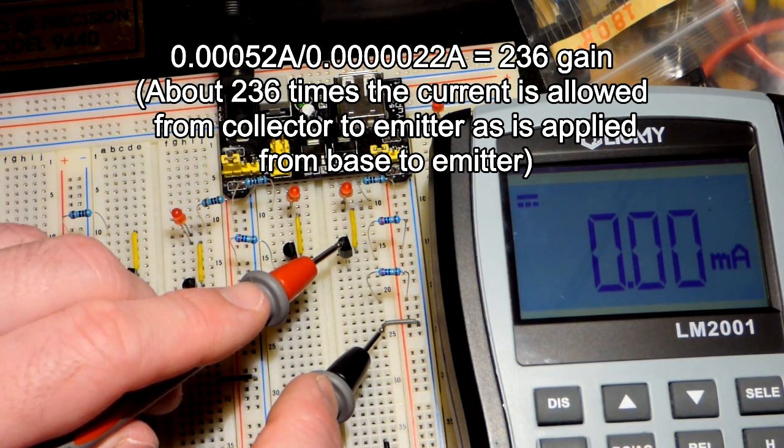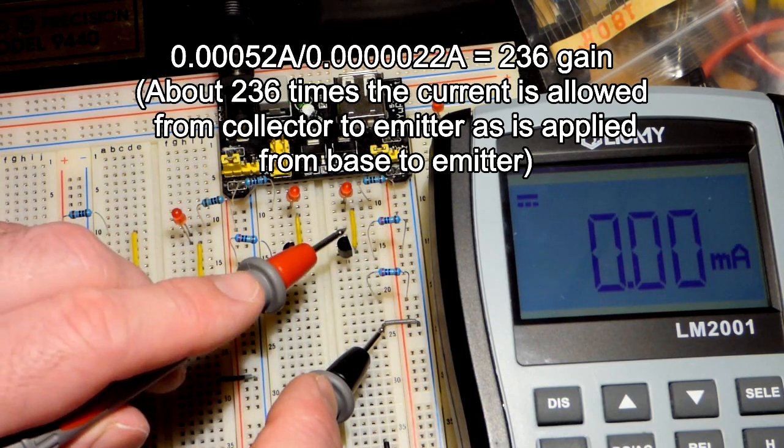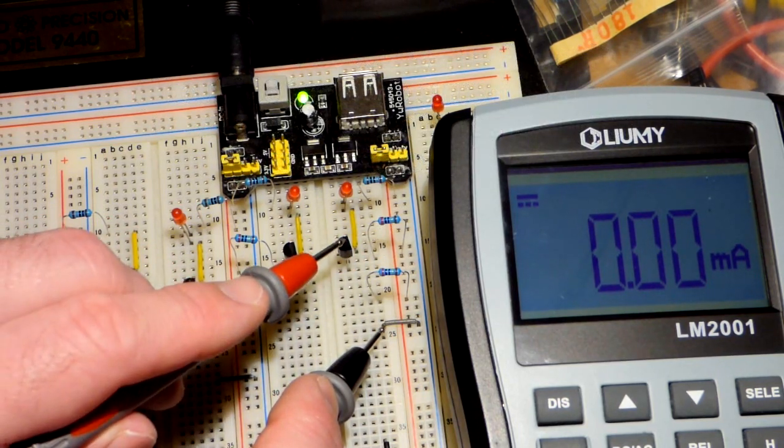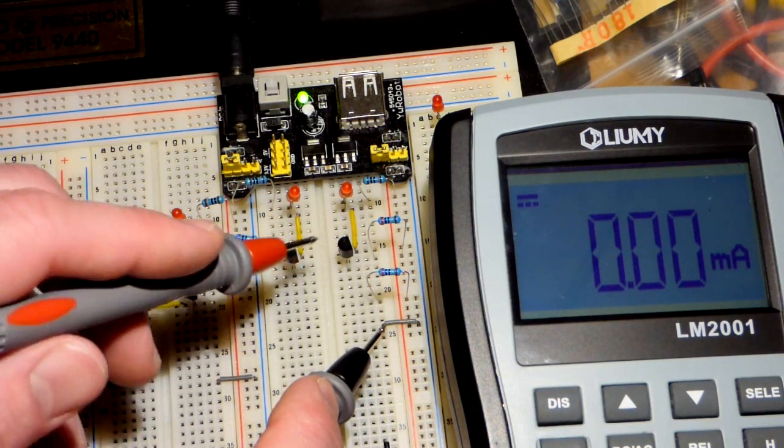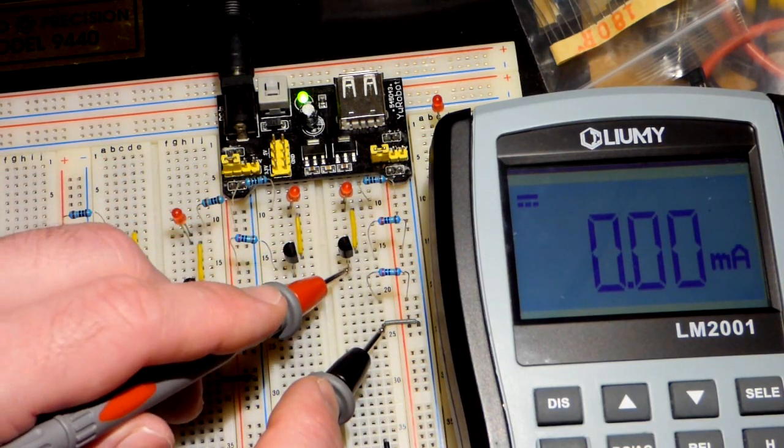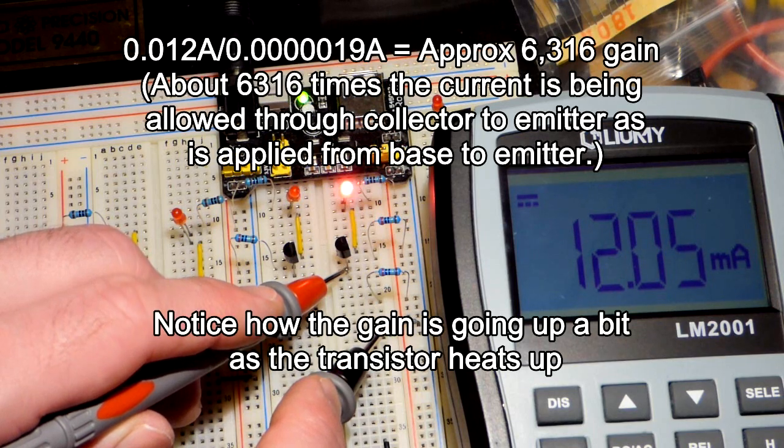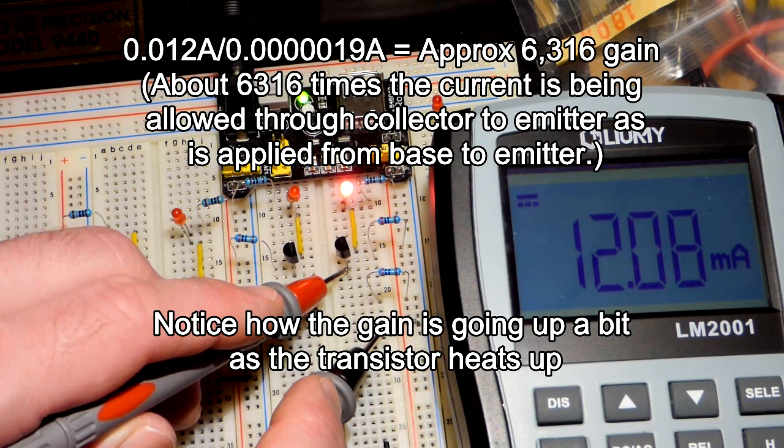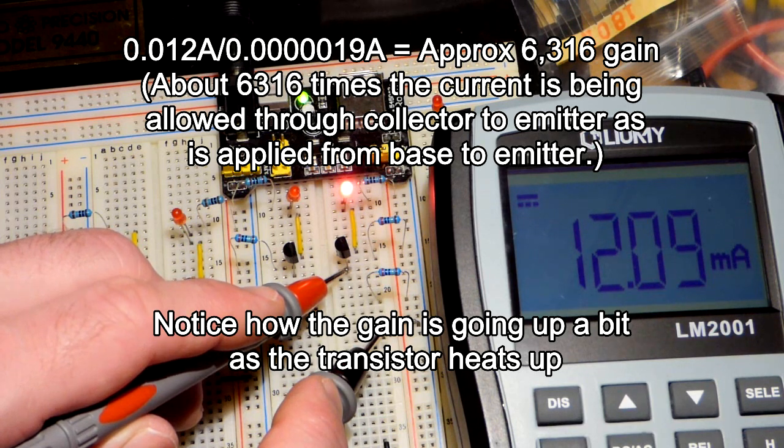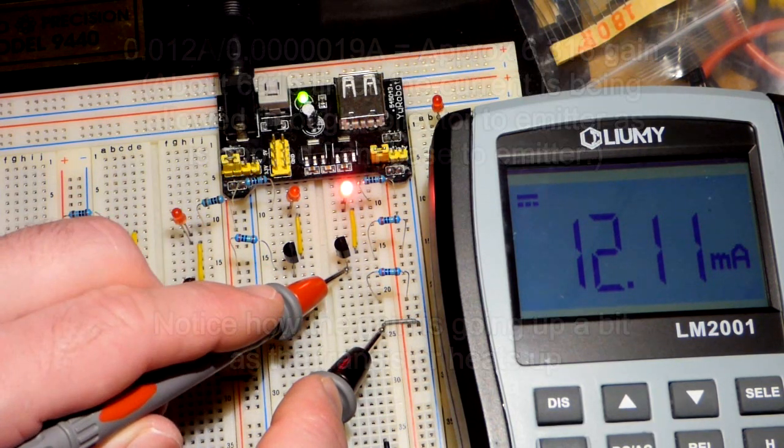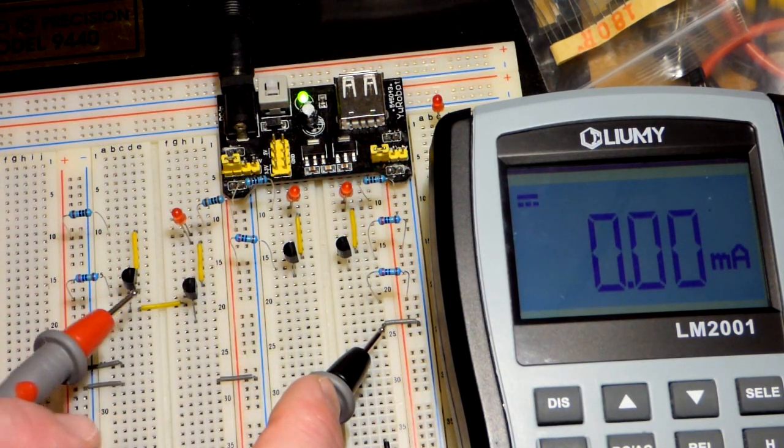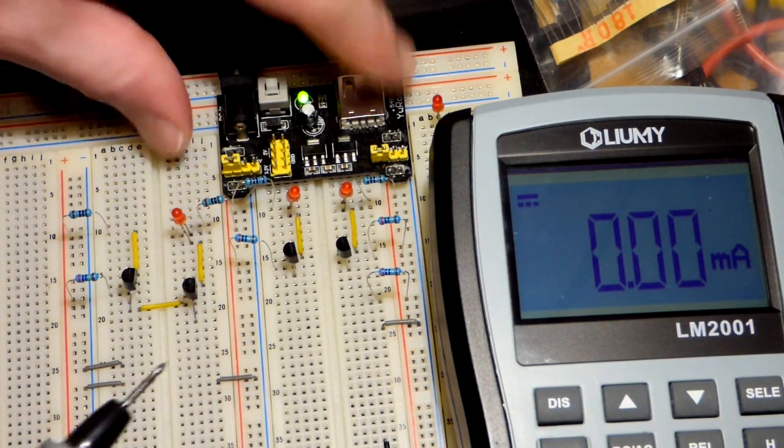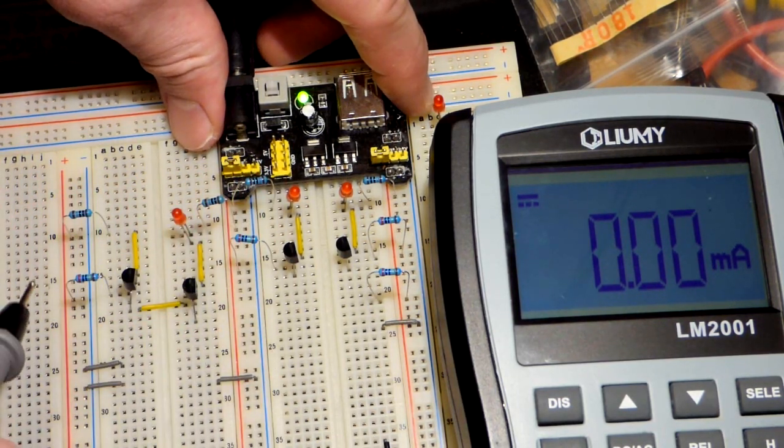So now let's go to the Darlington pair transistor, which is getting the same amount of current to the base. Other than the slightly more, or actually the double, the voltage drop of base to emitter. But otherwise, it's close to about the same amount of current to the base. But now you can see the collector is allowing a lot more current to go through the transistor than that one. So we're at 12.11 milliamps. And we should be pretty close with this setup. I need to shift it over there. I'm powering these two rails right now. I want to power these two rails.